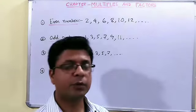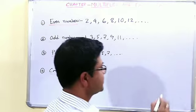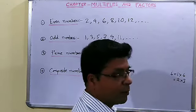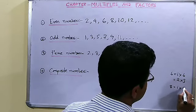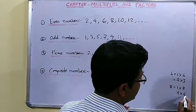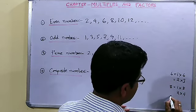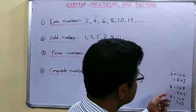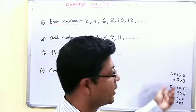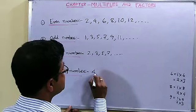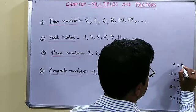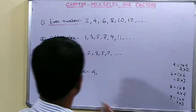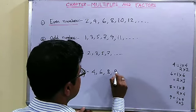Composite numbers are those numbers which have more than two factors. For example, 6 equals 1 into 6 and also 2 into 3 — so 6 is a composite number. If you take 8: 1 into 8, 2 into 4 — it has 4 factors. 9 is also a composite number: 1 into 9 and 3 into 3 — 3 factors. Now the smallest composite number is 4 because 4 equals 1 into 4 and 2 into 2, giving 3 factors: 1, 2 and 4. Then 6, 8, 9, 10 and so on are composite numbers.